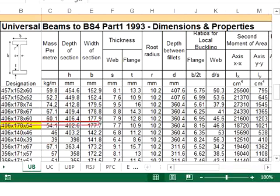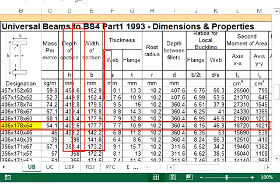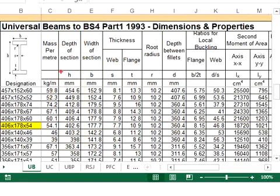The section is here. The dimensions of h, b, tw, tf, and r are given in the table. These values are indicated in the diagram here.